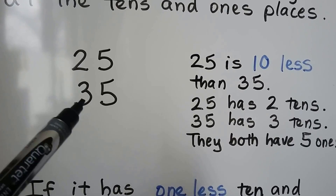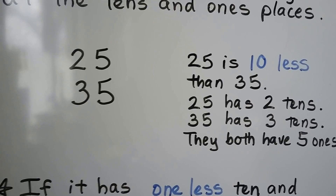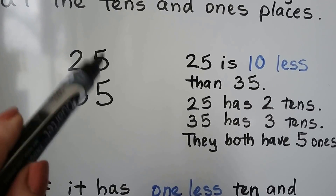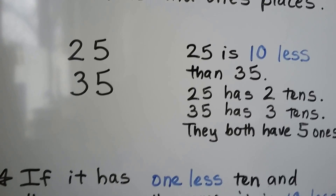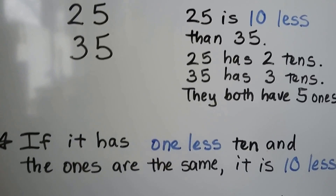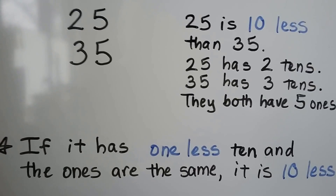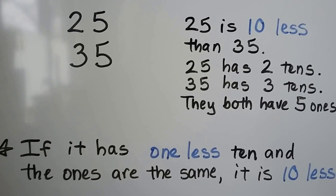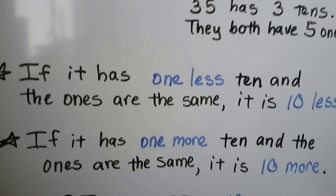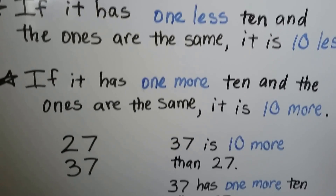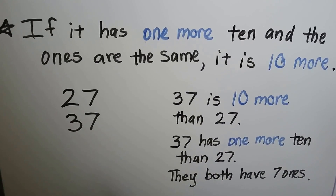That's 1 less 10 — a 2. They both have 5 ones, so the difference is 10. If it has 1 less 10 and the ones are the same, it's 10 less. If it has one more 10 and the ones are the same, it's 10 more.